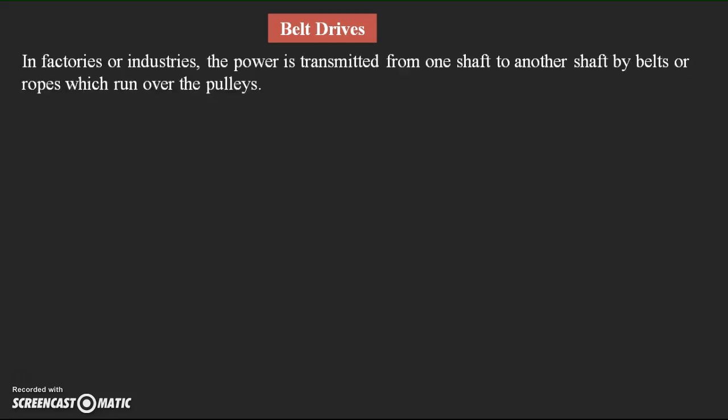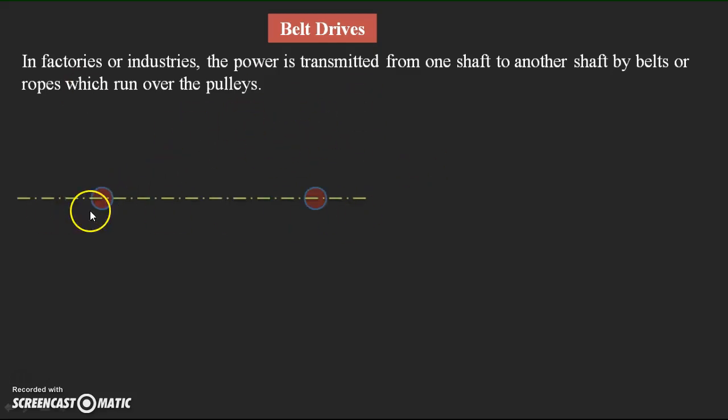In factories or industries, the power is transmitted from one shaft to another shaft by belts or ropes which run over the pulleys. This statement is applicable to both belt drives and rope drives. In industries, if we want to transmit power from one shaft to another shaft placed at different locations some distance apart, we use belts and pulleys. The pulleys are connected over the shafts.